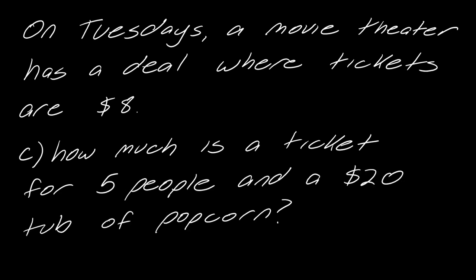So I'm building up to how this relates to an expression. Let's try another one. How much are tickets for five people and a $20 tub of popcorn? Think about what you're doing. You're taking the five people times the cost of the tickets, but then you're not done, right? You have to also add in that tub of popcorn. So this would be now 40 plus 20. This is 60 bucks right here.